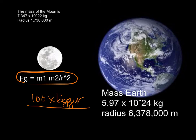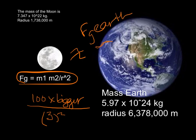Using the equation FG equals G times M1 times M2 over R squared: the mass of the Earth is 100 times bigger than the Moon's, but its radius is also about 3 times bigger. Squaring that gives roughly 10. So 100 divided by 10 is about 10, meaning gravity on the Earth is about 10 times bigger than on the Moon. That's why gravity on Earth is bigger than on the Moon.